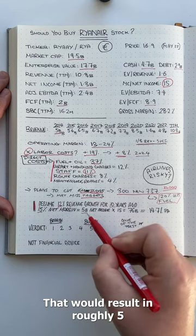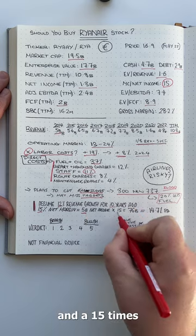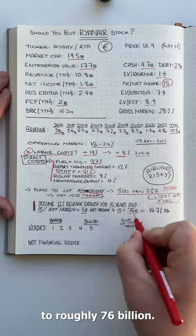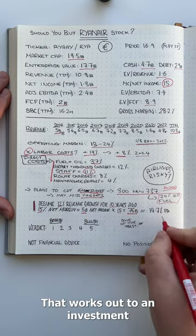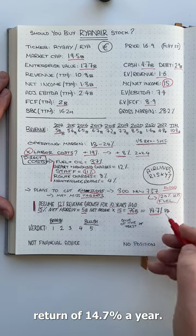That would result in roughly 5 billion of net income in 10 years' time, and a 15 times multiple gets the valuation to roughly 76 billion. That works out to an investment return of 14.7% a year.